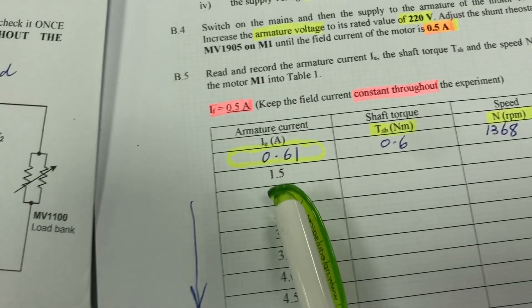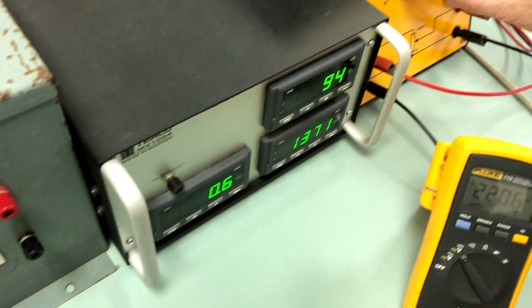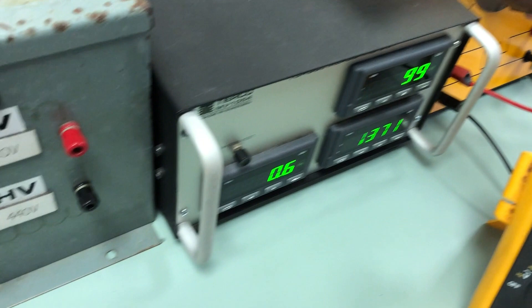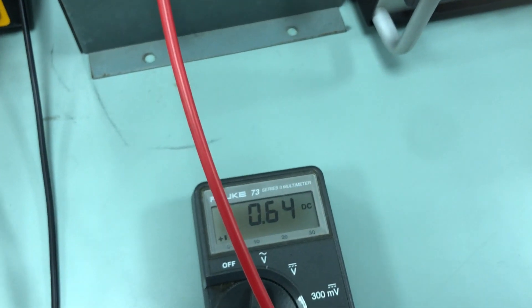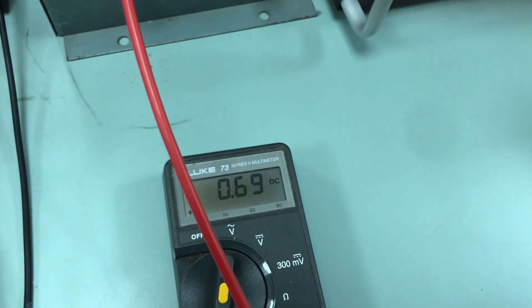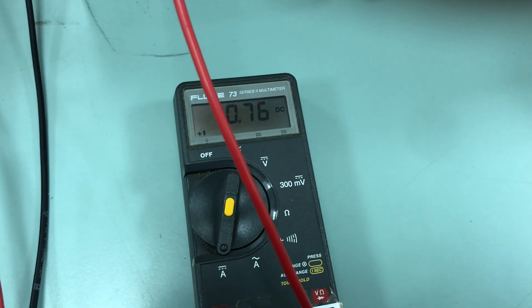So we will start with the 1.5A by increasing the field current of the generator. The armature current is actually 1.5A. So this is due to increase load.